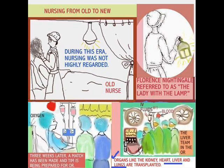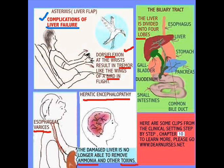Let's talk about the patient in liver failure. These patients experience certain complications, like asterixis, also known as liver flap. When they extend their fingers and dorsiflexion their hands, it literally flaps like the wings of a bird. Then you have things like esophageal varices, resulting in swelling of the varices in the esophagus, which can rupture, leading to shock.